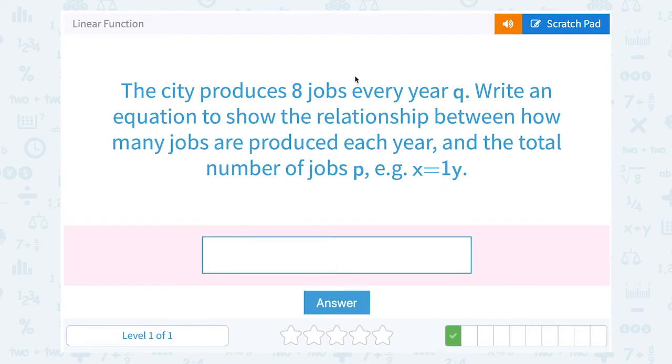The city produces eight jobs every year Q. Write an equation to show the relationship between how many jobs are produced each year and the total number of jobs P.